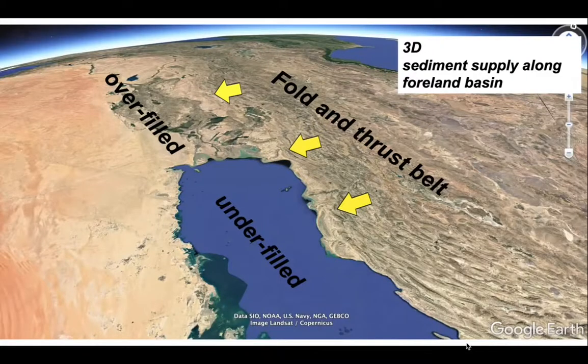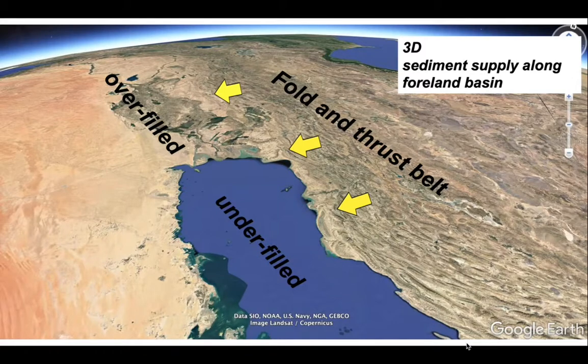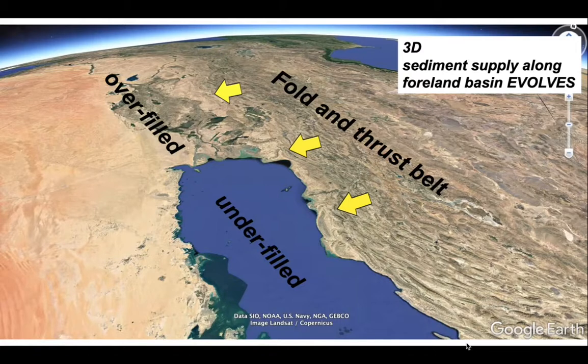And sediment supply, as we saw from the Arabian situation, is a three dimensional problem. Consequently, in this particular case, you would expect the foreland basin fill to evolve from being underfilled to start with. And as the river systems from Iraq migrate out into the marine area, the basin system will evolve from being underfilled to overfilled. So this stratigraphic expression will evolve through time.